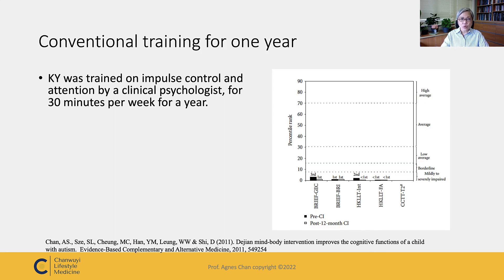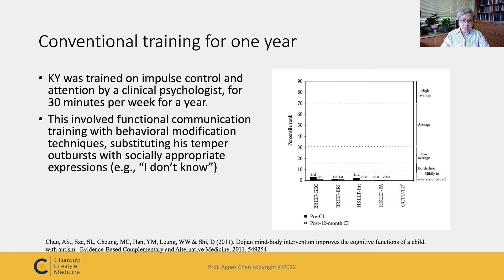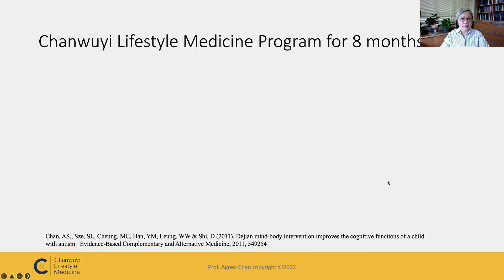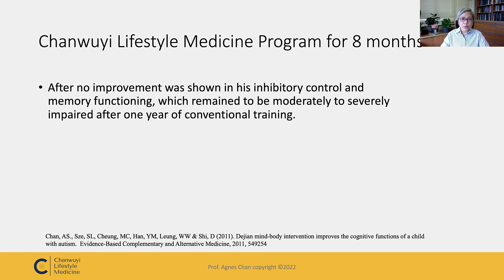KY was trained on impulse control and attention by a clinical psychologist for 30 minutes per week for a year. This involved functional communication training, behavioral modification, and social skill training. He also did 30 minutes of daily practice on a computerized attention and impulse control training. After one year, we did not see much improvement in the cognitive function of KY — his inhibitory control and memory function remained moderately to severely impaired.